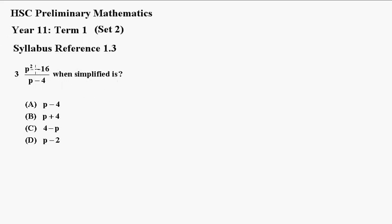To do that, what we need to do is factorise first. So factorising that, p squared minus 16 is p squared minus 4 squared, all over p minus 4. So that's the difference of two squares.